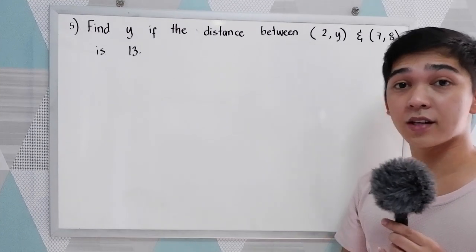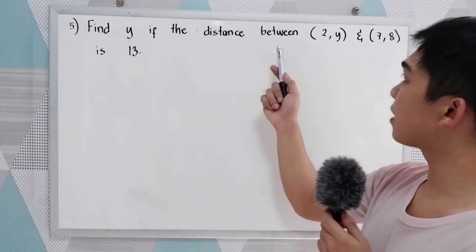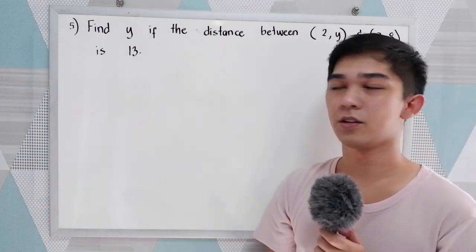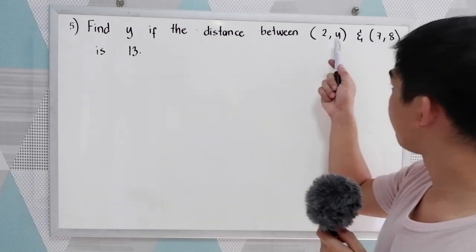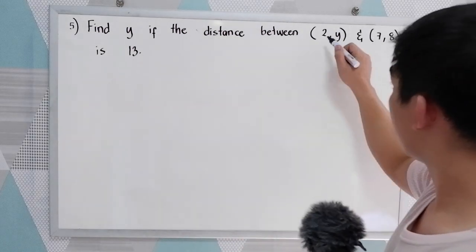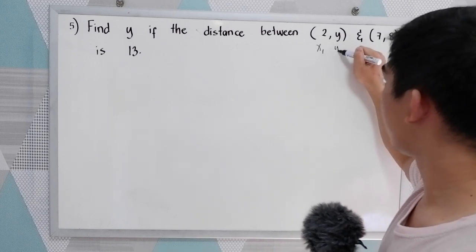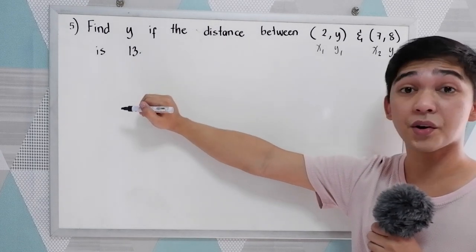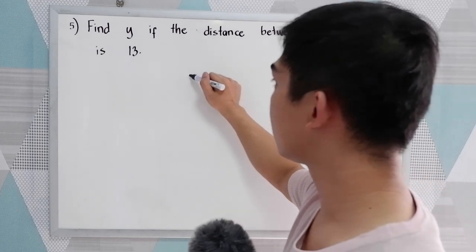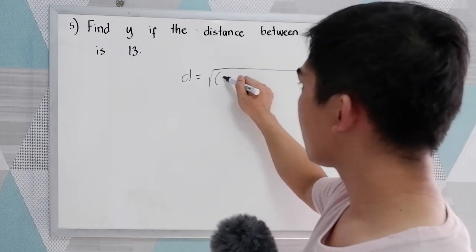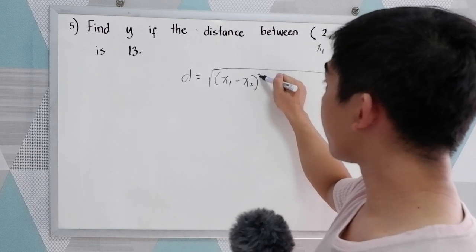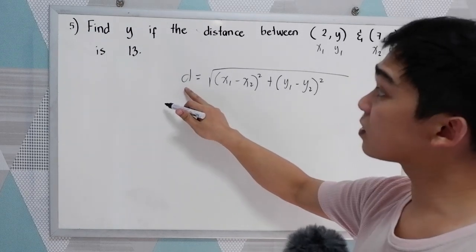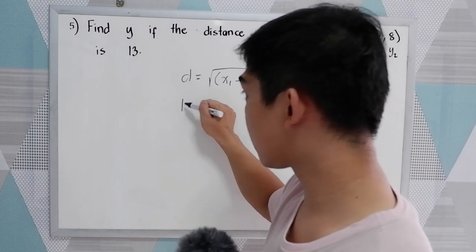Our fifth example: find y if the distance between (2, y) and (7, 8) is 13. We're going to find the value of y. Let's label our given: x₁ = 2, y₁ = y, x₂ = 7, and y₂ = 8. Of course, the given distance is 13. Let's write our formula: d equals the square root of (x₁ − x₂)² + (y₁ − y₂)². Given the distance is 13, let's substitute.